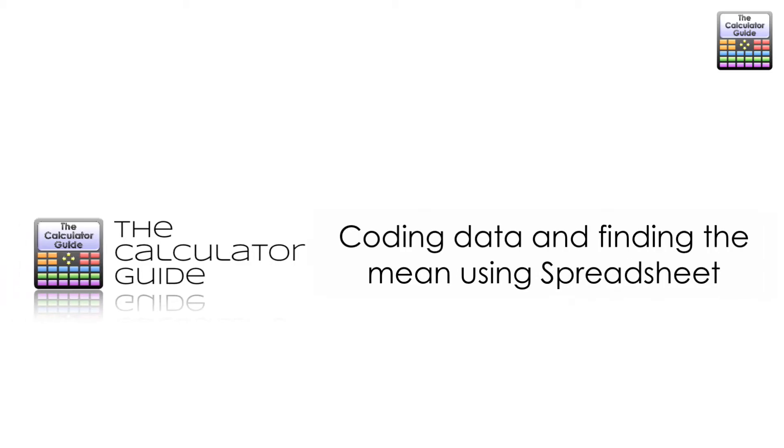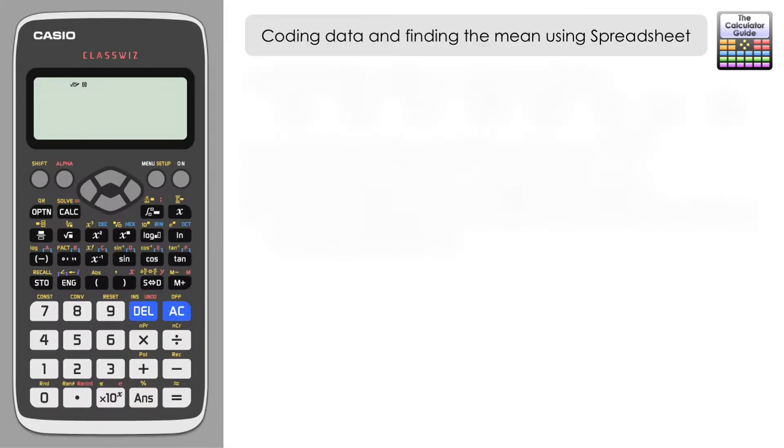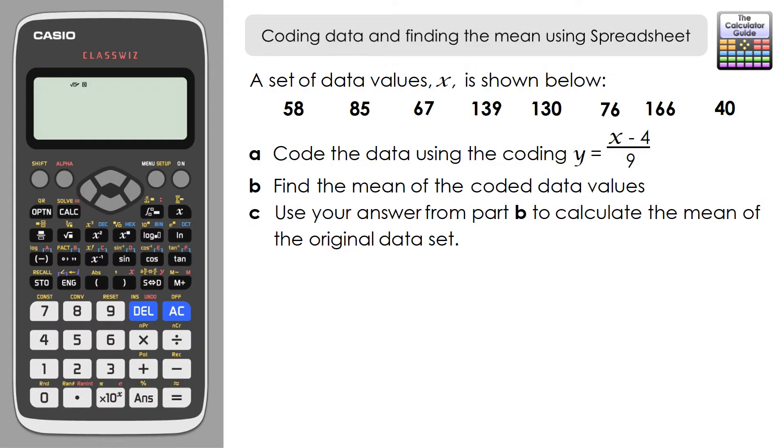Hello and welcome to the calculator guide video on coding data and finding the mean using spreadsheet. We have a set of data values which we're going to code using the coding y equals x minus 4 all over 9. Then we're going to calculate the mean of the coded data set.